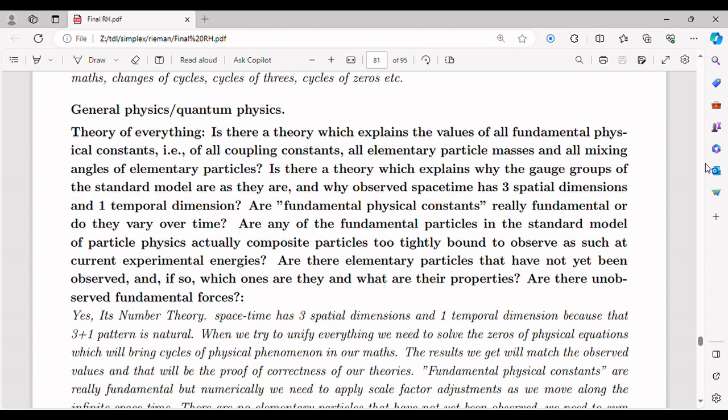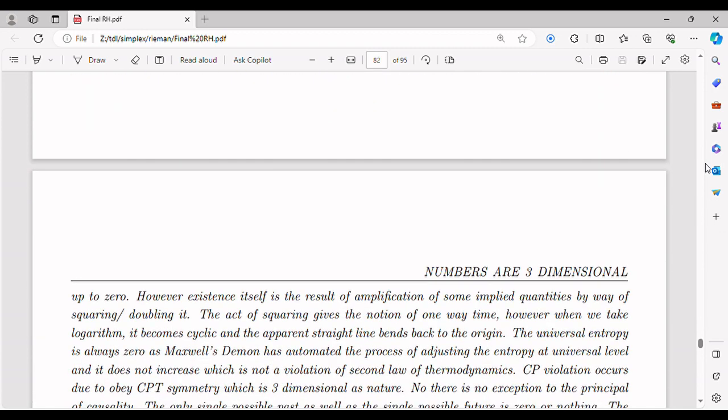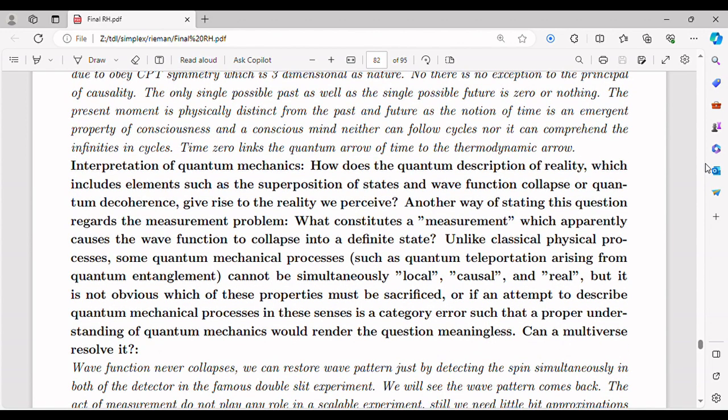While the prime number theorem suggests the average gap between primes is approximately ln of n, primes can have both large and small gaps. The dual nature of numbers arises from this seemingly contradictory behavior. On one hand, primes are bounded by the prime number theorem, indicating a decrease in their density as we move to larger numbers.